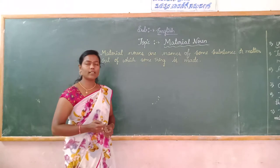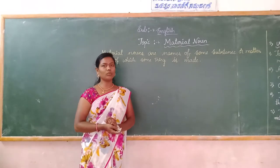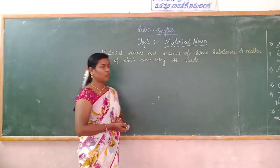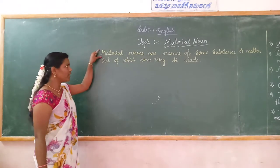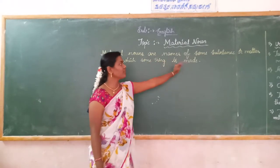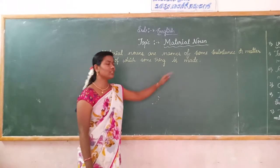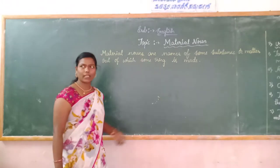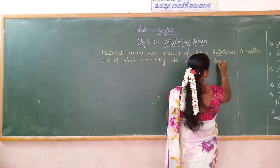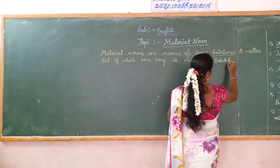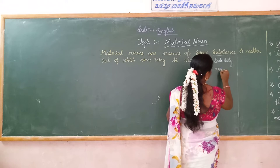Good morning students. In this class we will learn about the material noun. Material noun means vastu vachukha normakara. Material nouns are names of some substance or matter out of which something is made. It is called a material noun. Substance means solidity or material.